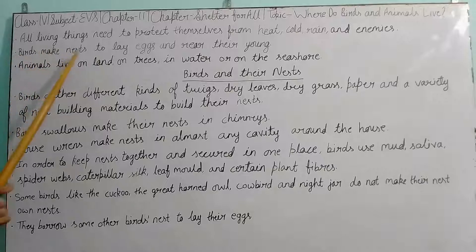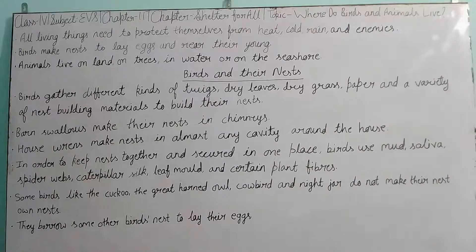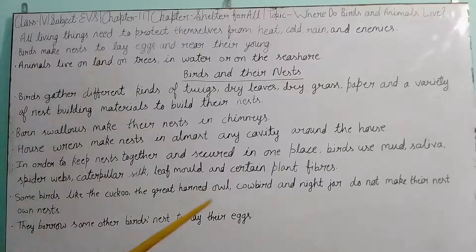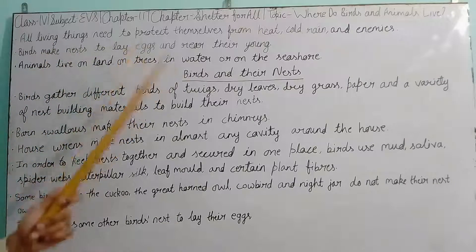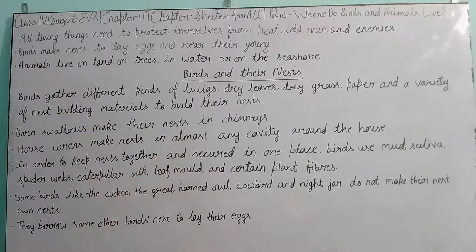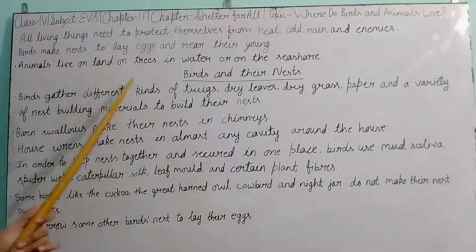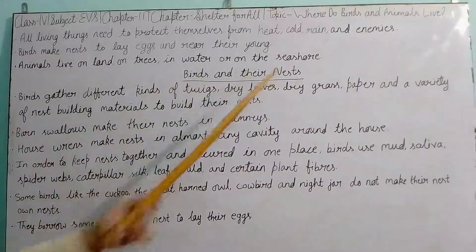Shelter is a requirement for all living things. Birds make nests to lay eggs and rear their young. Animals live on land, on trees, in water, or on the seashore. Living things make their shelter at the place that is their habitat. Birds make nests at trees or places where they feel it is suitable and safe for their young ones. Animals that live on land make shelters there; those on trees make shelter from trees; and those near the sea make shelter near that place.